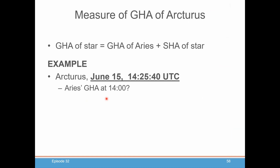So let's say we want to get the GHA of Arcturus. The way you do this is to get the GHA of the star you want to sight: you find the GHA of Aries, which we did in the last episode, and you just add the SHA of the star. Pretty simple.